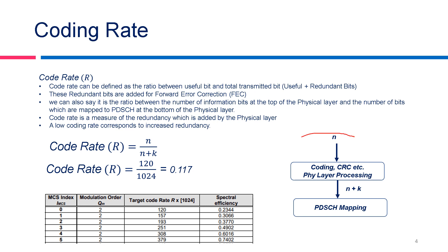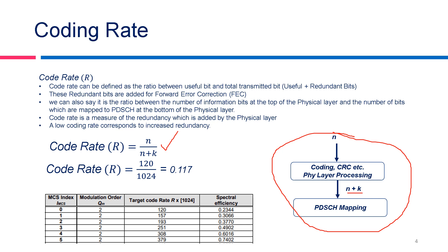On the right side we can see a diagram. We have N number of bits at the top of the physical layer, and after adding redundant bits this becomes N plus K. These N plus K bits are then mapped on the PDSCH channel. The code rate is therefore a measure of the redundancy added by the physical layer. A low code rate results in high redundancy.